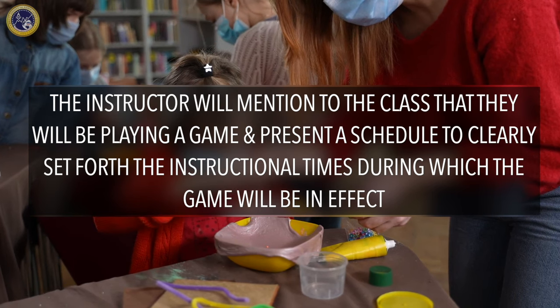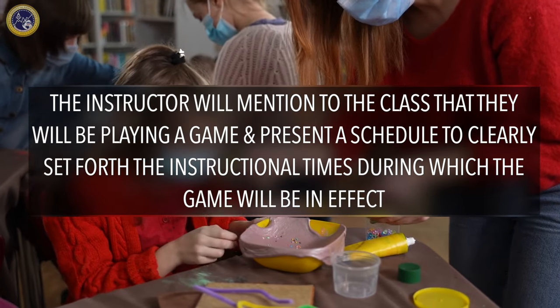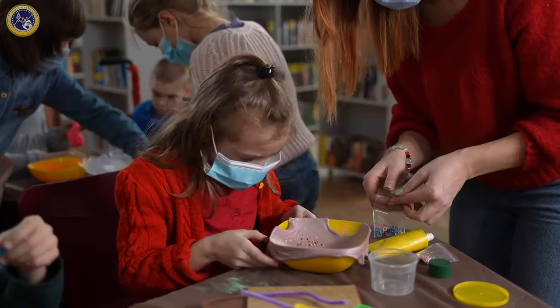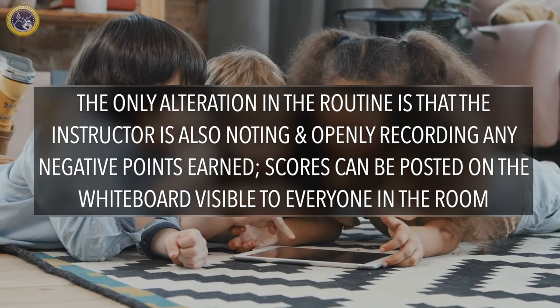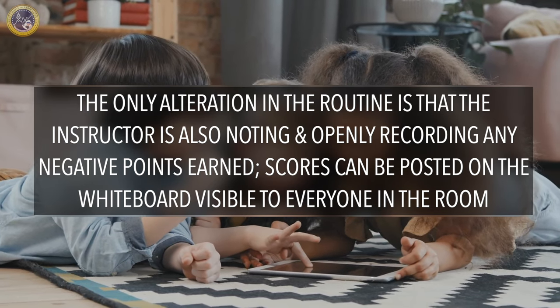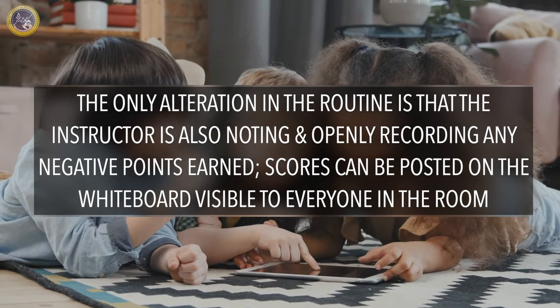Once the behavior has been selected and clearly defined, the instructor introduces the game to the class and presents a schedule to clarify the instructional timing during which the game will be in effect. During game time, the teacher continues to carry out the usual routine lesson plan. The only change is that the instructor also notes and openly records any negative points earned by either team. Scores can be posted on the whiteboard or on a large piece of paper visible to everyone.